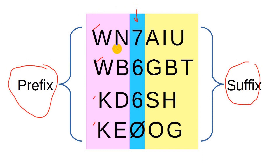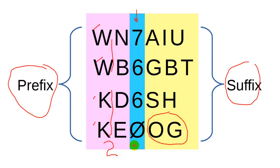The prefix indicates the country. In this case, call sign prefixes beginning with W or K are assigned to the United States. The suffix refers to the specific license. Note that my current call sign KE0OG is a two-by-two call sign, meaning two letters in the prefix and two in the suffix. WB6GBT is an example of a two-by-three call sign.